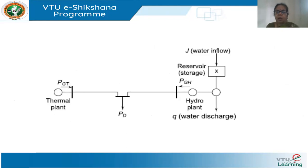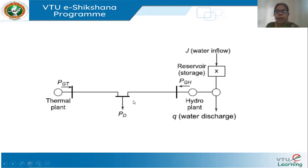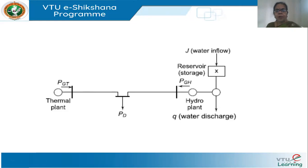To illustrate the concept, consider a simple system. J is the water inflow to the reservoir, which has a storage. X denotes the minimum storage — all the water available cannot be used for generation, you cannot drain the reservoir to zero. Q is the water discharge. PGH is the active power generated by the hydro plant, PD is the demand, and PGT is the power generated by the thermal plant.